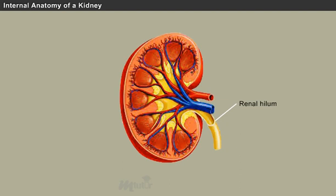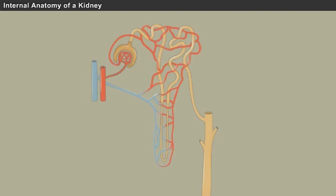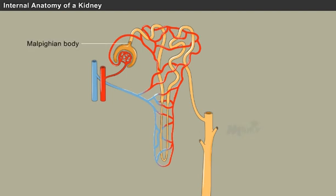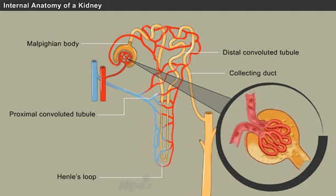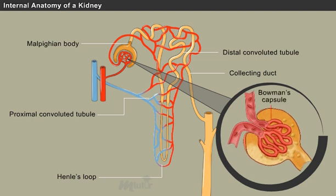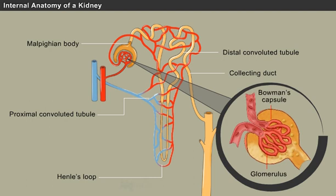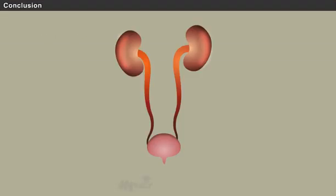Nephrons are the tubular structural and functional units of a kidney. Each nephron has the following parts: the Malpighian body, proximal convoluted tubule, Henle's loop, distal convoluted tubule, and collecting duct. The Malpighian body contains a cup-shaped Bowman's capsule, which houses a tuft of capillaries called the glomerulus.